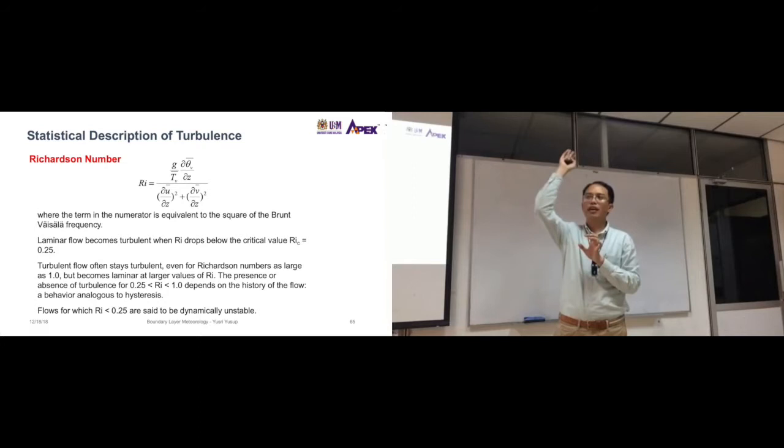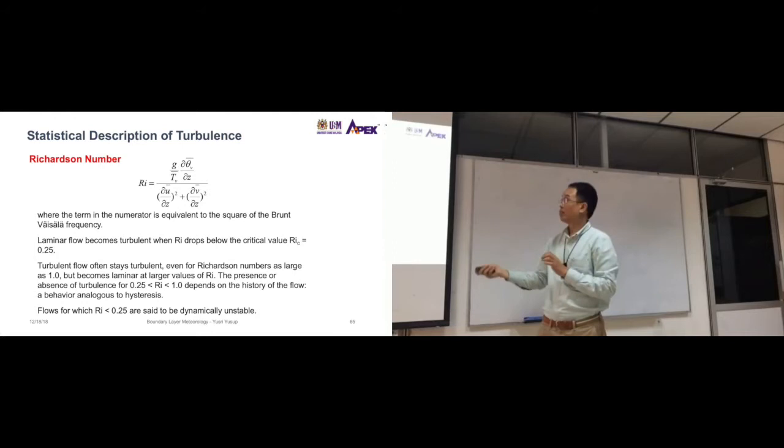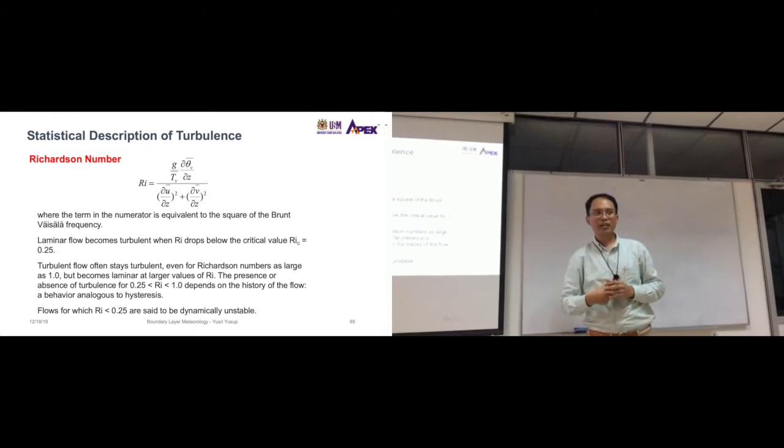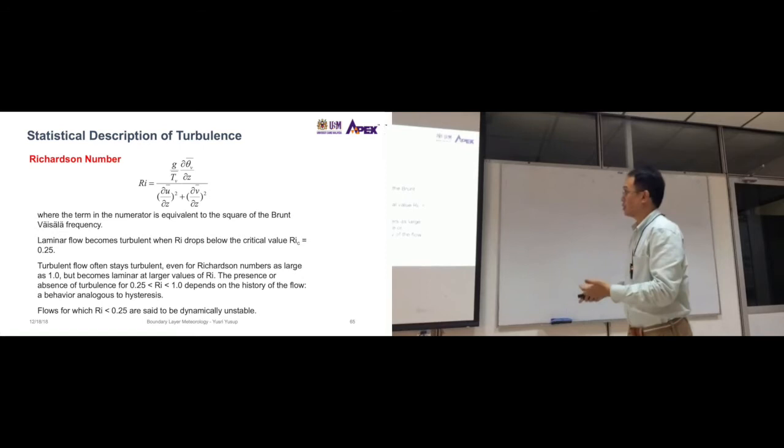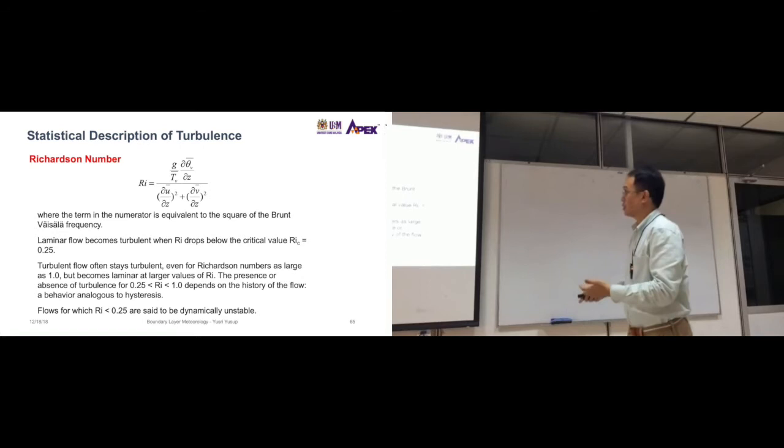Once you have this, you have a temperature and wind profile, and from that, you can calculate this. Most weather stations don't have that. They only have one level of measurement. So that's why you're not able to calculate Richardson number, because you just have one level. So that's why you don't see this often. But once you do have the Richardson number value, then you'll be able to predict whether the atmosphere is unstable or stable.